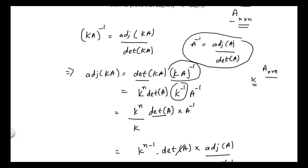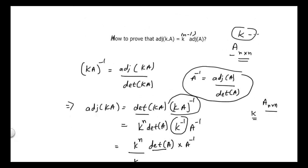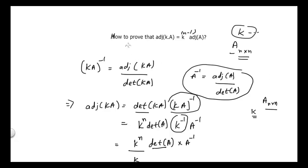That's all about this video. In this video we proved that adjoint of kA is equal to k^(n-1) times adjoint of matrix A. I hope you learned something from this video, and I hope to see you in the next video. Thank you.